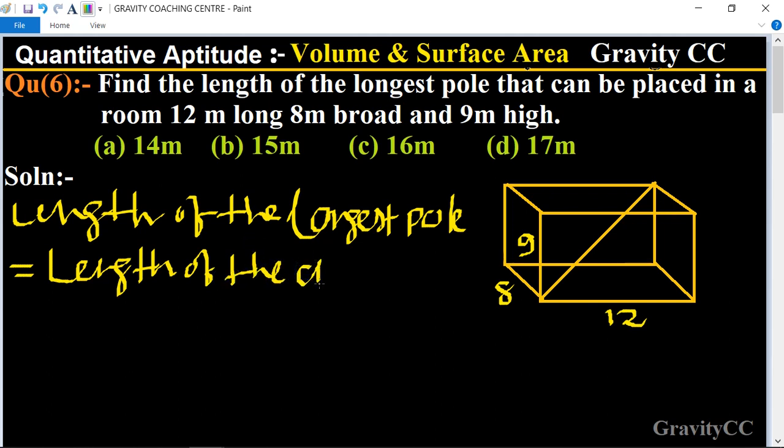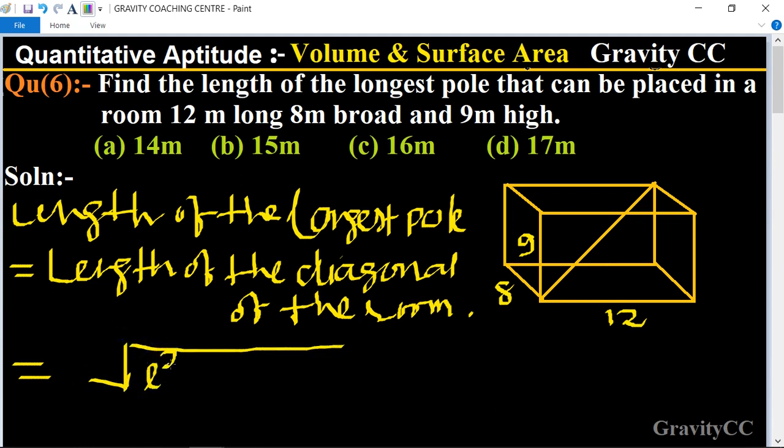We know that the room is in the shape of a cuboid, and the length of the diagonal of a cuboid is root under l square plus b square plus h square. So now we put the values of length, breadth, and height.